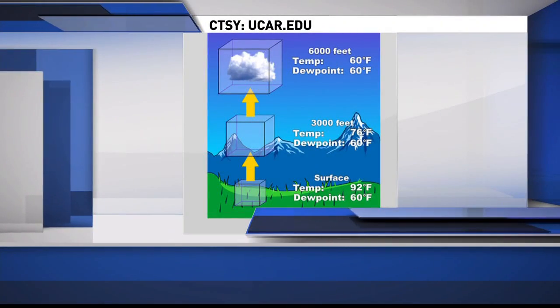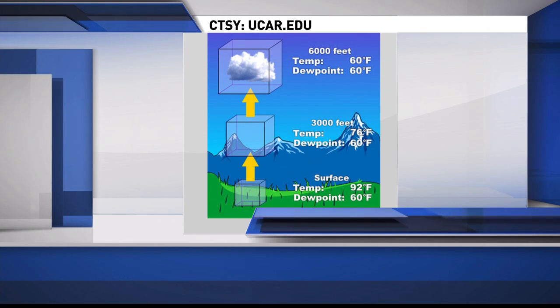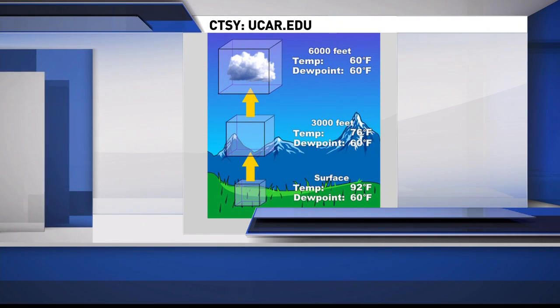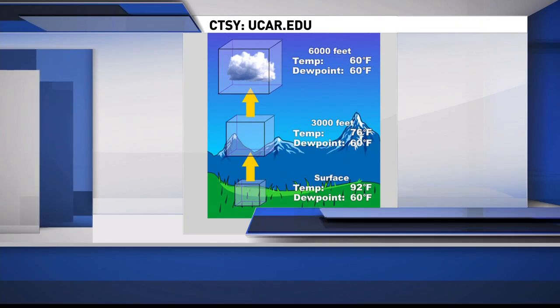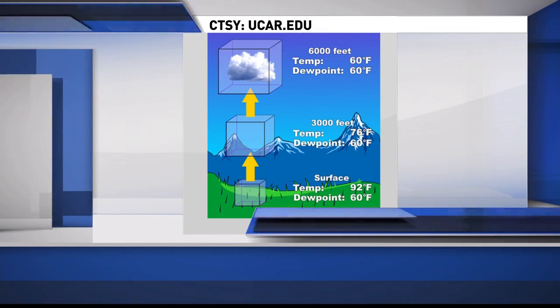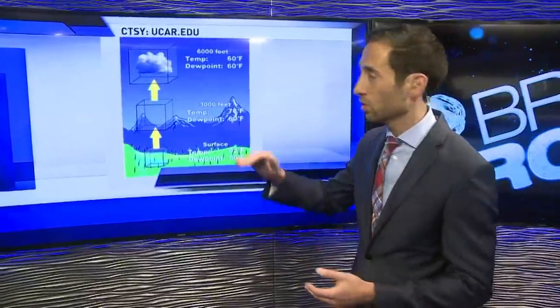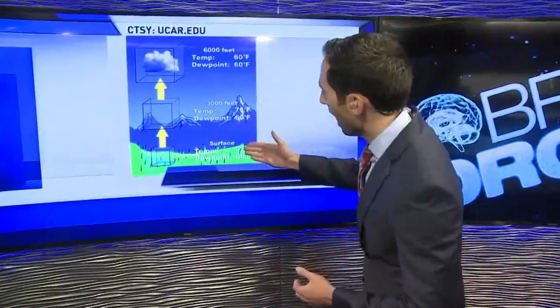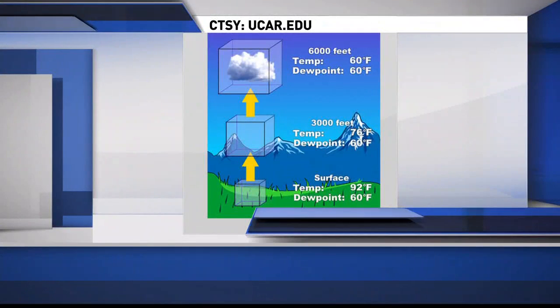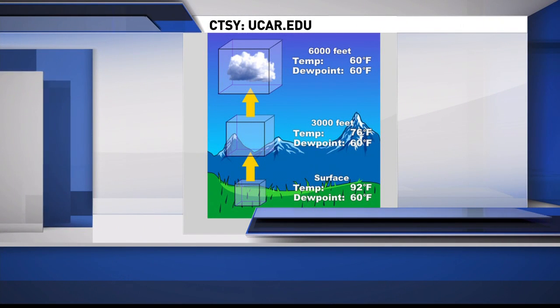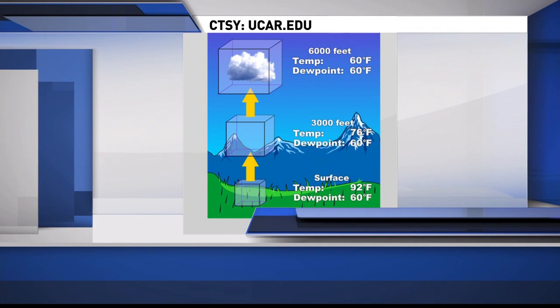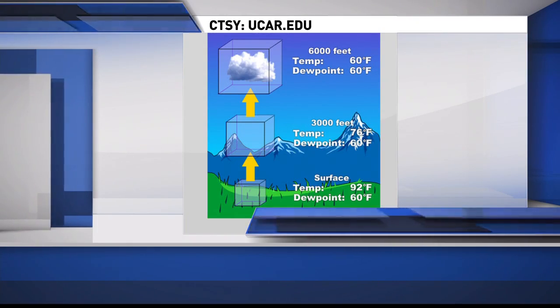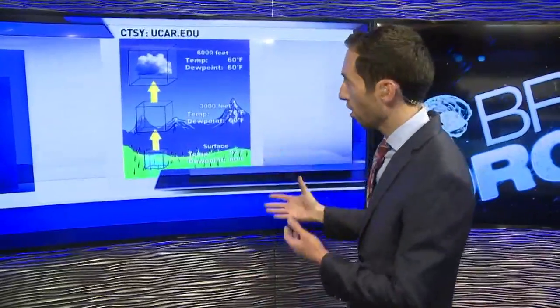The basic premise behind cloud development is that the air near the ground heats up — whether from sunlight most often, or just because of an air mass change. That air is now less dense and rises up into the atmosphere. As it does so, it cools. The atmosphere is stacked such that in general it's cooler aloft than at the surface. So as it's rising and cooling, it gets closer and closer to its point of condensation, meaning it can hold less water vapor when it's cooler. Eventually it reaches the point where the temperature and the dew point are the same, and condensation occurs — much like you see on a car window — except in this case it's creating a cloud, which is a combination of supercooled water droplets and ice crystals.